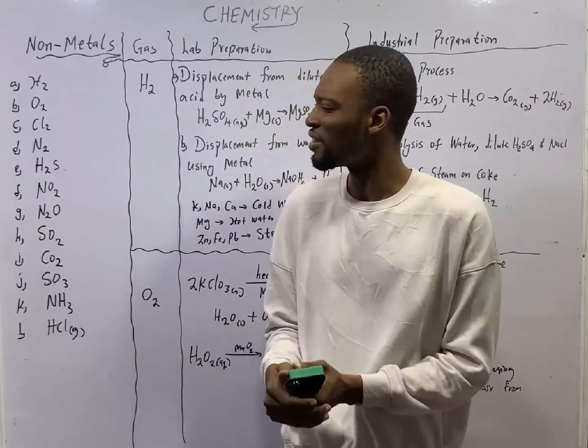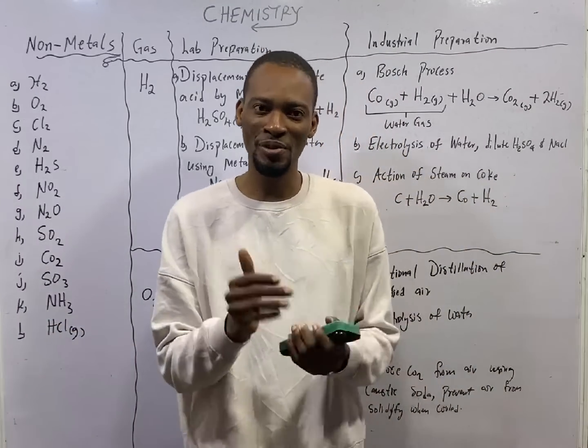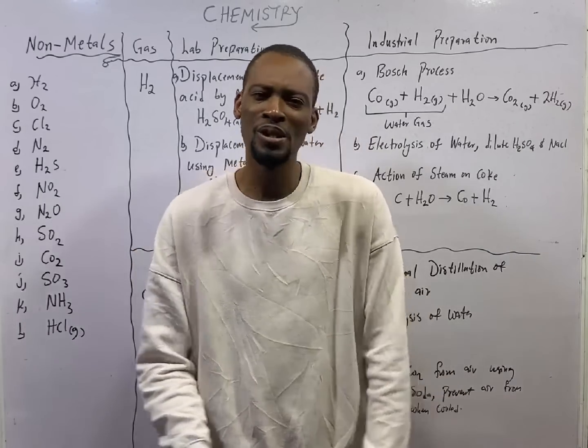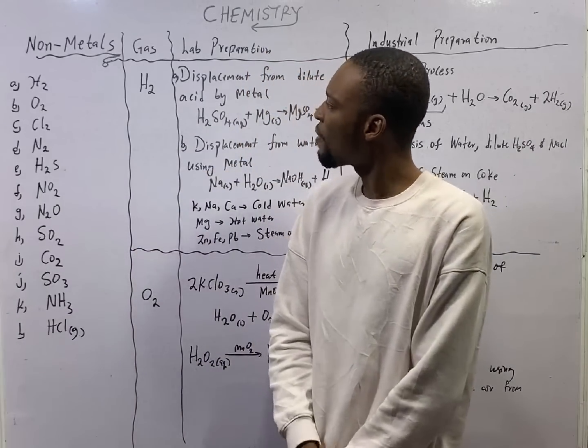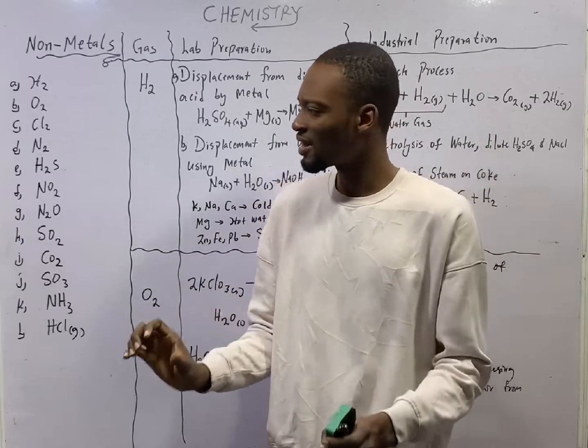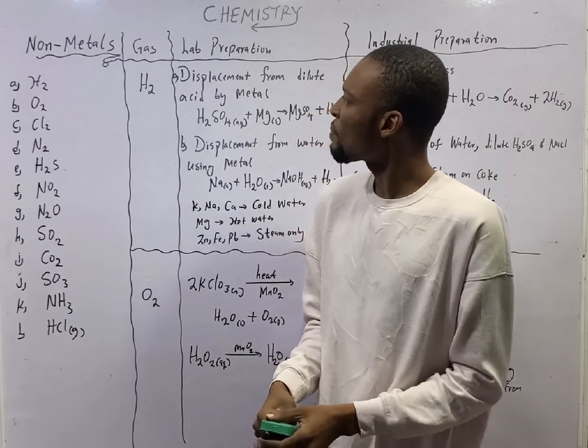This is episode number 45 of the 120 days to JAM chemistry with Flash Isaac. In this episode, we shall be looking at preparation of hydrogen gas and oxygen gas.